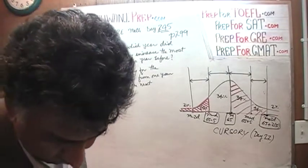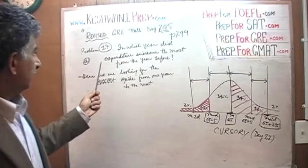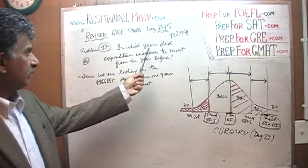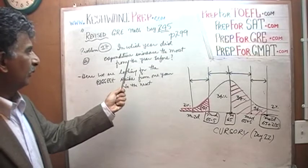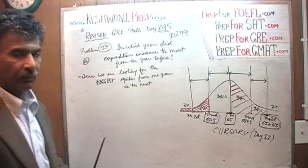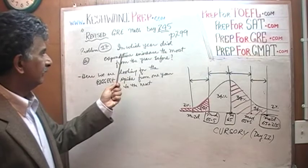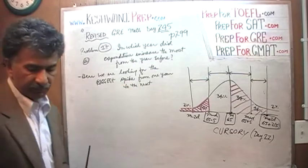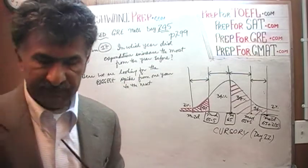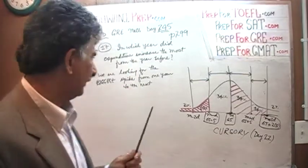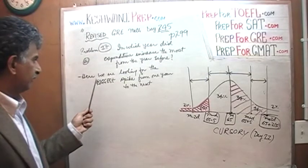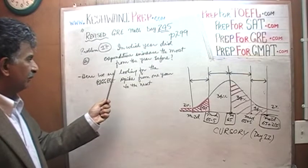So we're just going to talk about it. Part A says, Part A is asking us, in which year did the expenditure increase the most from the year before? In which year did the expenditure increase the most from the year before? Which is the very same thing, which is the exact same thing as asking, which is the exact same thing as asking, where is the biggest spike?